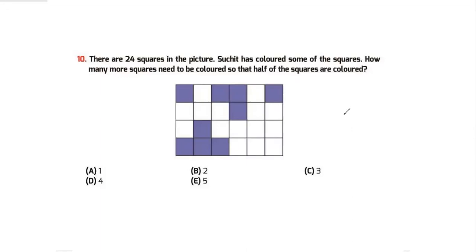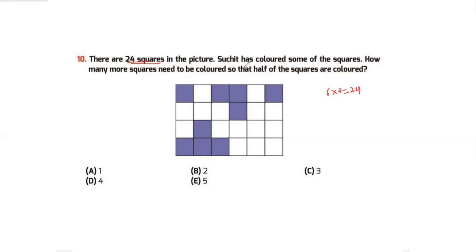Question number 10: there are 24 squares in the picture. Instead of counting one by one, notice there are 6 squares across and 4 down, so 6 times 4 equals 24. Half of 24 is 12, so I need 12 squares colored. Counting the already-colored squares: 3, 4, 5, 6, 7, 8, 9 — that's 9 colored. So 12 minus 9 equals 3. I need to color three more squares.